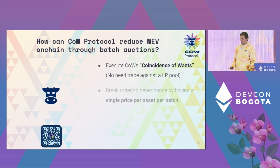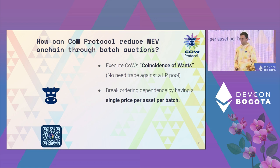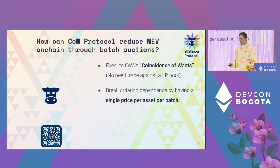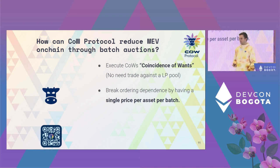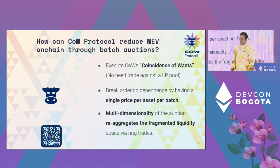If we have to go to AMMs, we try to break order dependency by having a single price per asset per batch. Every single batch settlement in CoW Protocol has uniform clearing prices, meaning people trading the same token pairs in the same batch always get the same price - unlike what is happening now, where we see a lot of price disparity. This is guaranteed because the executors of the batch commit to a price vector where, regardless of the order of trades, they always give the same outcome. In other words, the order of the factors does not alter the product. Batch auctions also allow us to re-aggregate fragmented liquidity via ring trades.